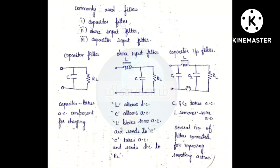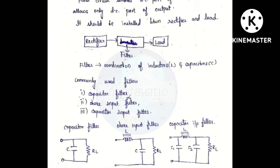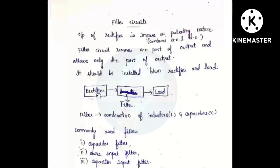We can connect filters in parallel or in series. We can see just one circuit. If we connect all circuits, we can do a smoothing action — we can remove the AC content from the DC. So we can do the filtering. This is the filter circuit. In the rectifier, the output can become pure DC, and we can send that to the load. That is the filter circuit.